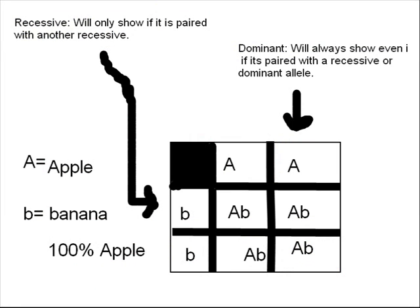This is a Punnett Square. A Punnett Square determines the outcome of what the offspring might look like based off of its parents.